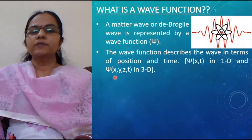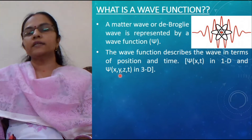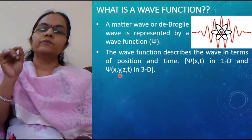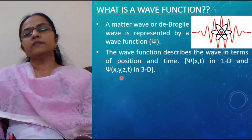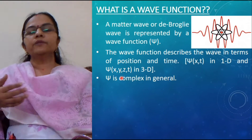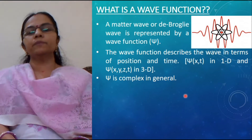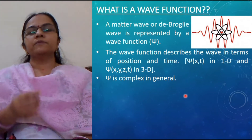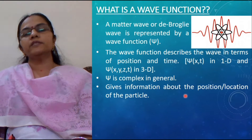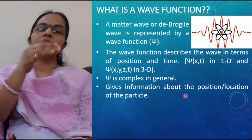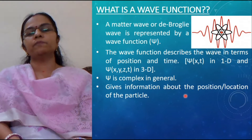Similarly, for three dimensions this can be represented by psi of r and t, where r is a vector defined by the coordinates x, y and z. So these are the representations of wave function in one dimension and three dimensions. Now psi is complex in general — this wave function is a complex quantity. As you know, complex means there is a real part and an imaginary part, and this gives information about the position or location of the particle: at what time what will be the location, and how the location is changing with respect to time.